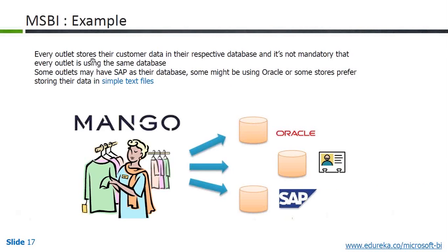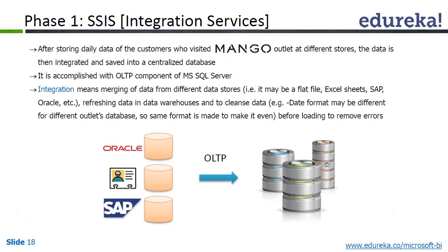Somebody running a Mango store in India may be using some database, a flat file, or an Excel sheet to maintain information about their sales. But somebody in the US, where a lot of sales are happening, may be running their business on Oracle, SQL Server, or maybe SAP — you don't know. It depends on the type of business. It is not mandatory that everybody uses the same platform. So there is a variety of data. So how can SSIS solve this problem?